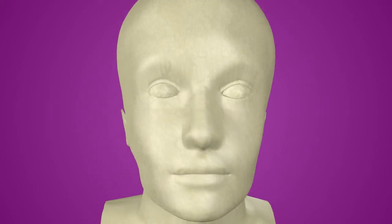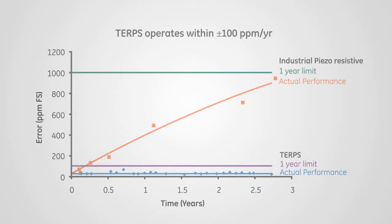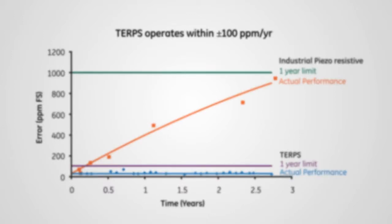All of these innovations come together to deliver exceptional performance. Test results show that the error over a wide temperature and pressure range never exceeds 0.01% FS. Stability data over two years show that TERPS operates within a plus-minus 100 ppm per year.